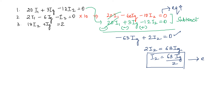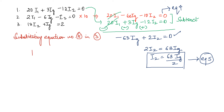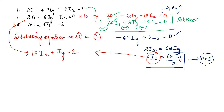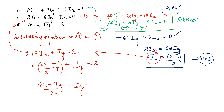We substitute equation 5 into equation 3: 13 × (63·Ig / 2) + Ig = 2, which gives 819·Ig / 2 + Ig = 2. Taking Ig common: Ig × (819 + 2) / 2 = 2, so Ig × 821 / 2 = 2.